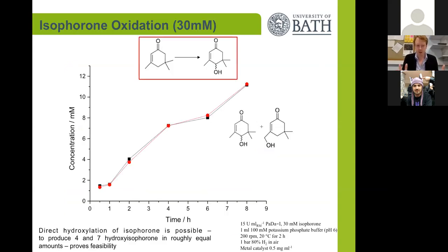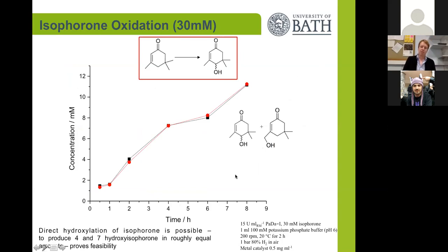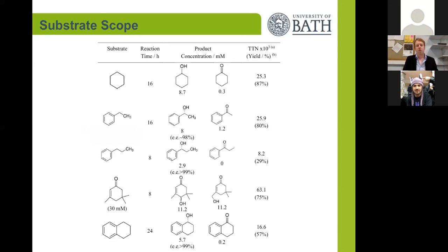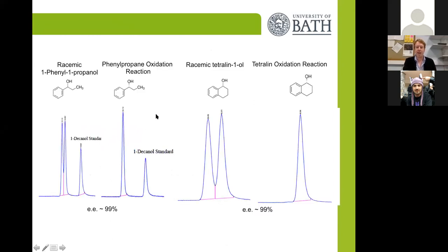We extended the substrate scope further into more complex terpene-type molecules such as isophorone, which is used in the fragrance industry. The enzyme and the combined system could very selectively install the oxygen atom either at one position or another — the inherent selectivity of the enzyme is why we produce two products. We transformed a whole range of molecules, including cyclopropane and tetraline. In both the cases of ethylbenzene propane and tetraline, we were again able to install chirality, producing just the R enantiomer of tetraline.